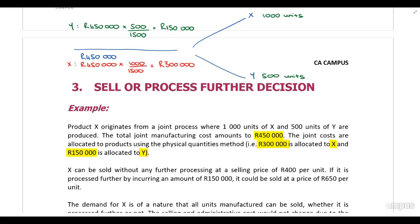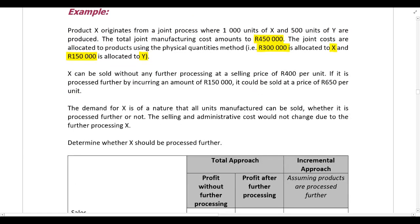Product X can be sold at the split-off point for 400 rand per unit, or it can be processed further incurring an additional processing cost of 150,000 rand, which increases the selling price to 650 rand per unit. Demand is such that all units can be sold either way. Selling and admin costs do not change as a result of further processing — since there's no difference between alternatives, those costs are not avoidable and therefore not relevant.